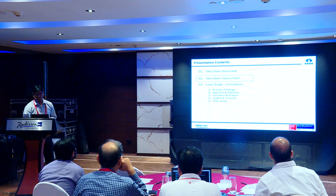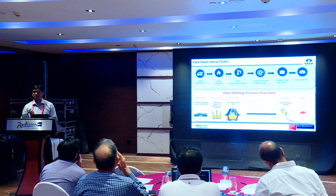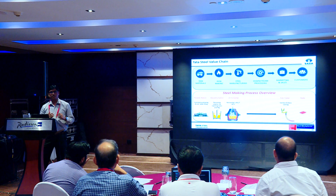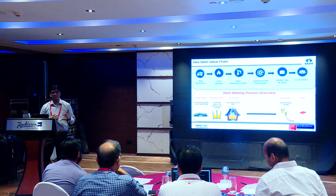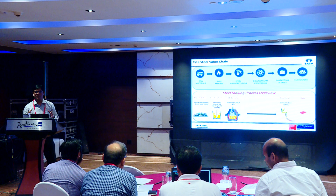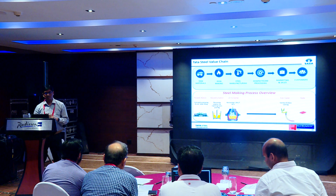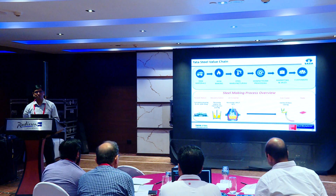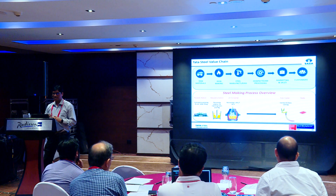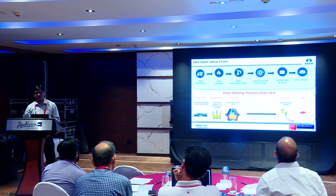Moving on to the Tata Steel value chain: the raw materials used to produce steel are iron ore, coal, and limestone. Some are produced at our captive mines; others are procured from Australia, New Zealand, and Gulf countries. These raw materials are transported to iron-making locations where hot metal iron is produced. That is then processed in steel manufacturing units — the steel melting shop or LD shop — where it is purged and cleaned to produce steel. Downstream processing produces HR coils and wire rods, which are served to customers through marketing and sales channels.